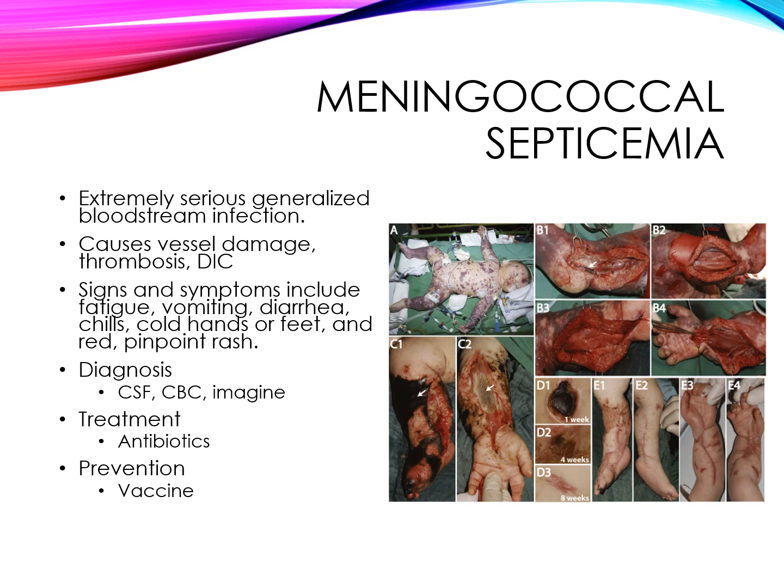Other less common conditions associated with Neisseria meningitidis include pneumonia, urethritis, and arthritis. Diagnosis is made by growing the bacteria from an obtained culture. Blood and cerebrospinal fluid are the top two preferred fluids for culture, but cultures can also be obtained from synovial fluid and skin lesions.